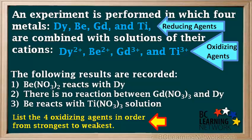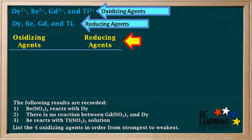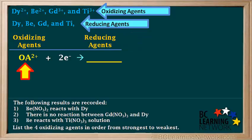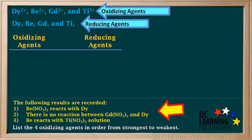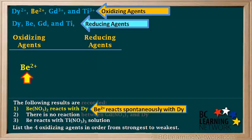The question asks us to list the four oxidizing agents in order from strongest to weakest. We start by using the results to create a little reduction table. Like the big reduction table, we put the oxidizing agents on the left and the reducing agents on the right. The rule is that any oxidizing agent on the left will react spontaneously with any reducing agent on the right below it. Because BE2+ is an oxidizing agent, we write it on the left, leaving room above and below it for the other species.